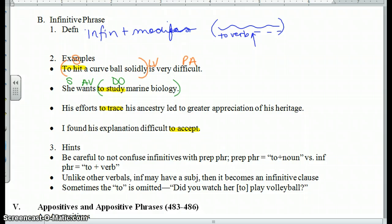Next example, his efforts to trace his ancestry led to a greater appreciation of his heritage. Verb, led. Who or what led. Efforts led. Now I have a fence around all of this. So I have to make a decision. His efforts led, prep phrase, prep phrase. So I'm all good. To trace. Now what about his ancestry? Does it tell me about tracing? Does it tell me about efforts? Does it tell me about led? His ancestry is what he's tracing. So that works together as a phrase. Ancestry is modifying what he's tracing. Now what does this do as a group? It tells me more about which efforts. What kind of efforts. Efforts is a noun that makes this whole thing an adjective.